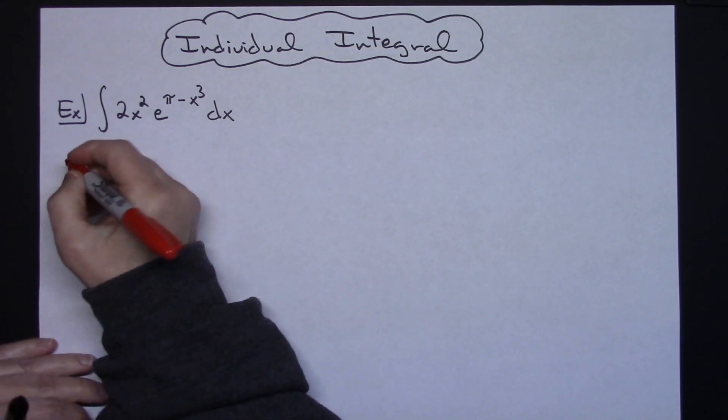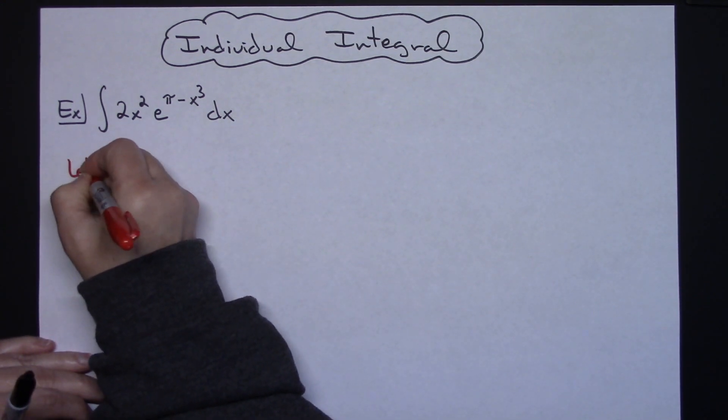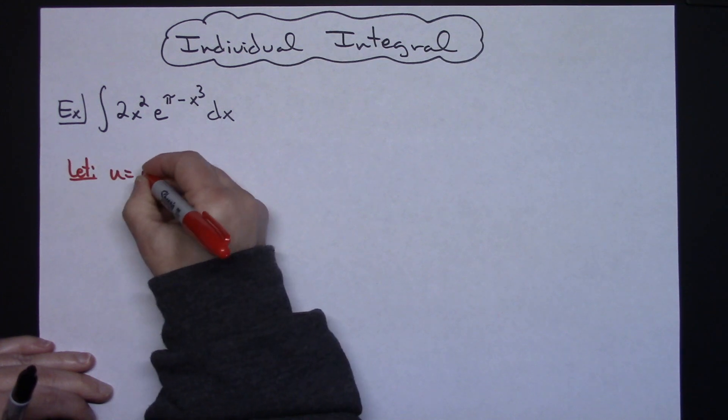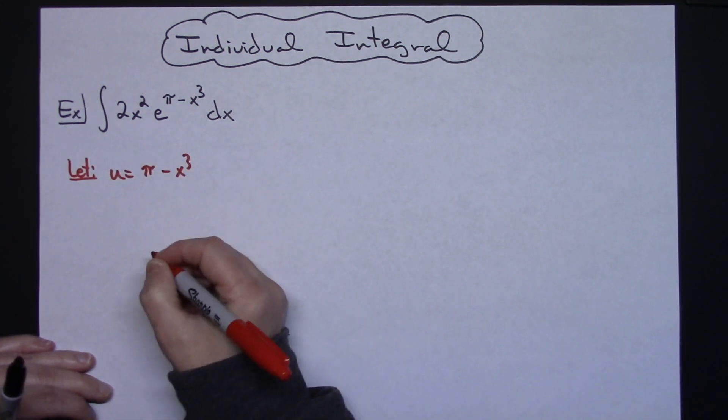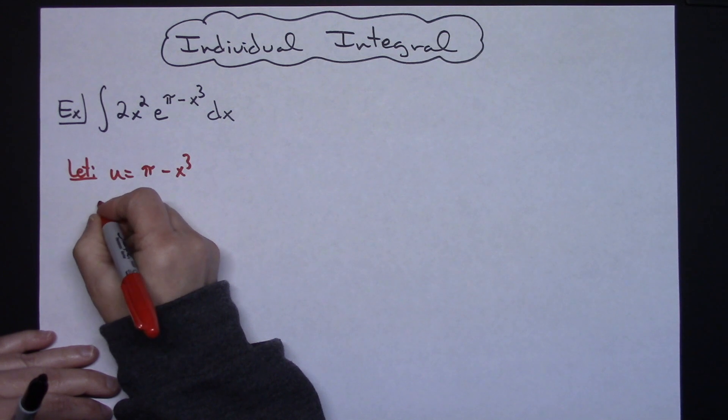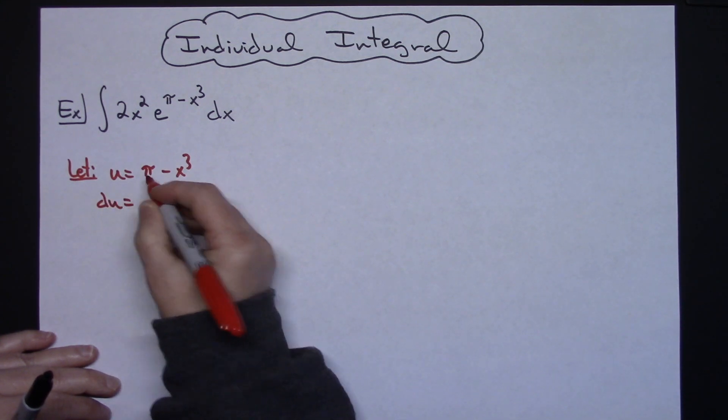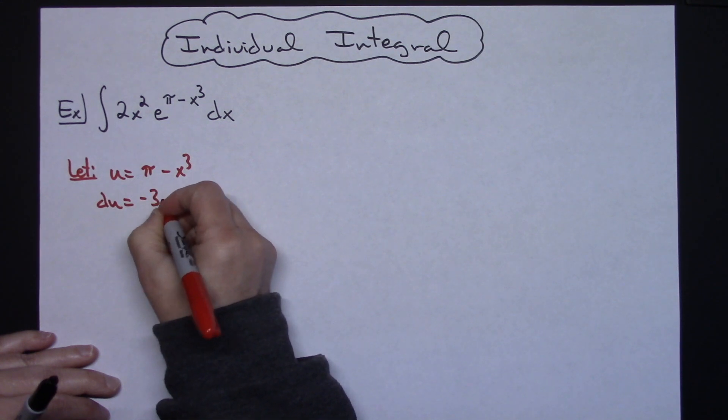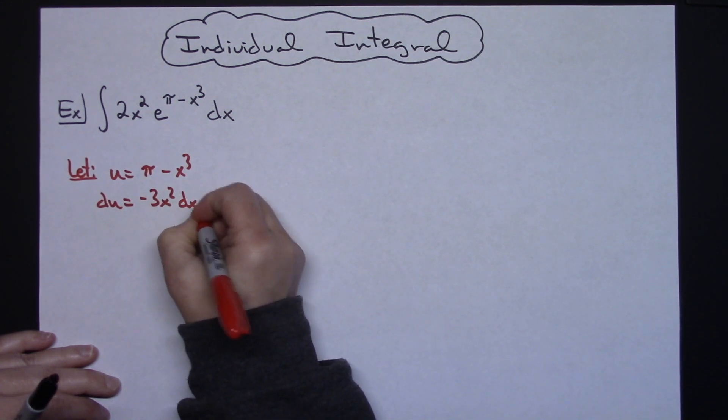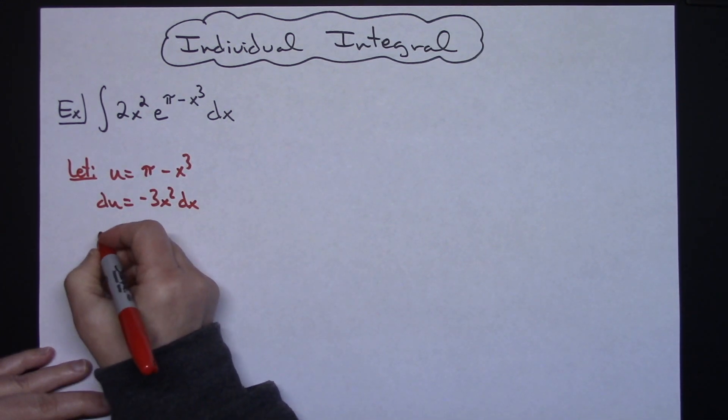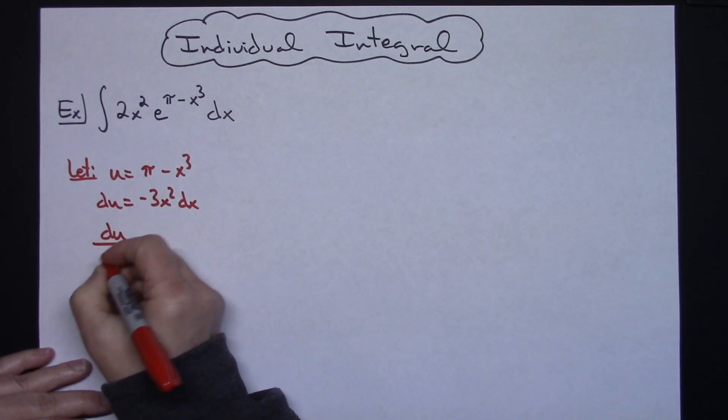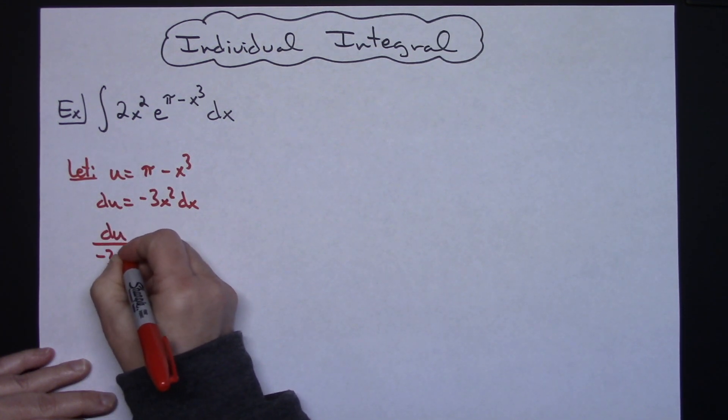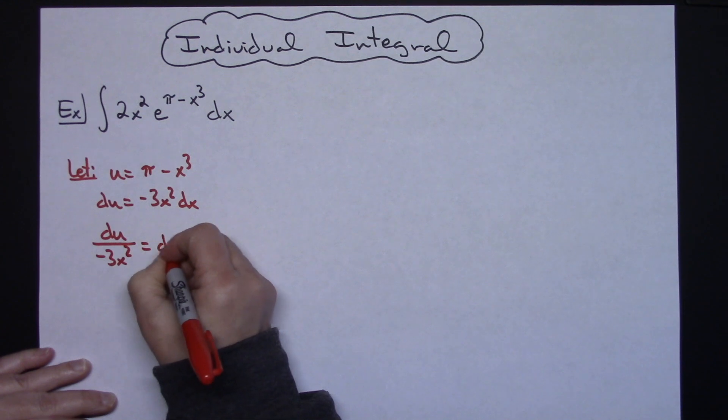So I am going to start by letting u be pi minus x to the third. I'm going to take the derivative of both sides. So du equals, the pi is a constant so it goes away, so then I'll have a negative 3x squared dx. I'm going to go ahead and solve for dx. So du over negative 3x squared equals dx.